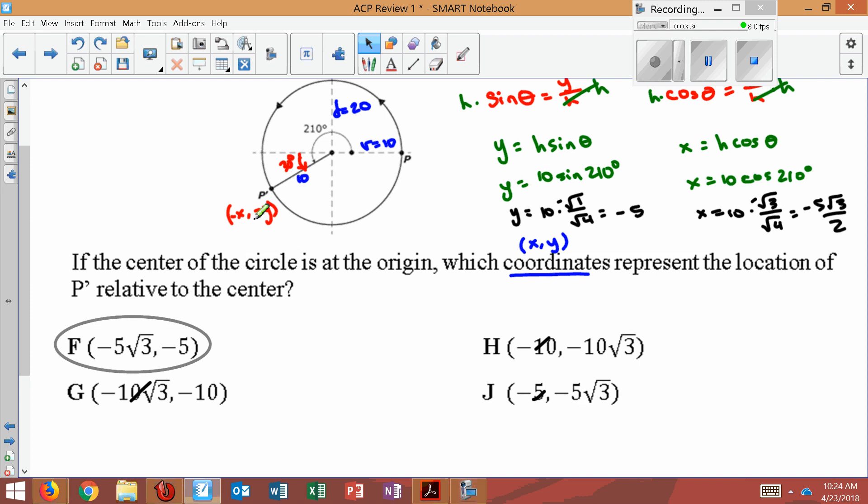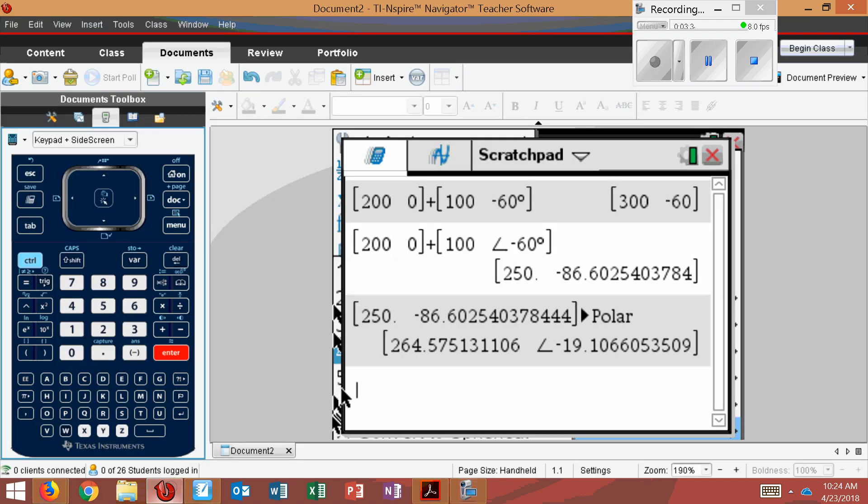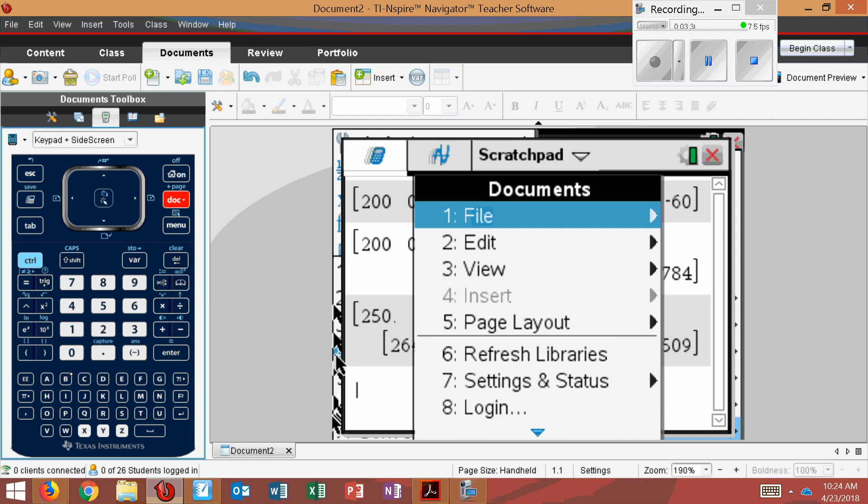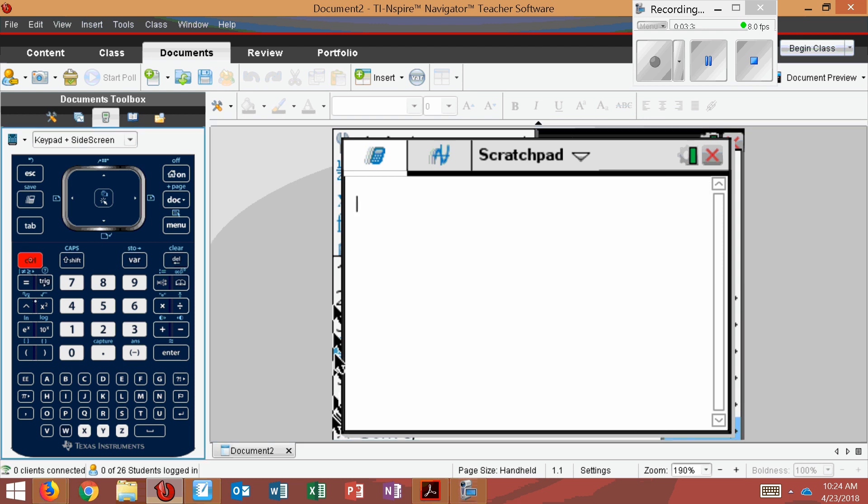Now a way to check this in the calculator from the get-go is we could have just realized, oh, they've given us polar coordinates. And so if I type it in the calculator and press enter, the calculator will give them to me as rectangular. So I press control parenthesis to give me a bracket. 10, comma. It's an angle, so I do control book. Hit angle of 210 degrees. When I press enter, it will convert these to rectangular.